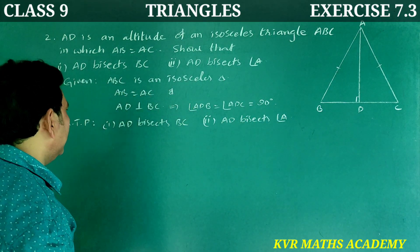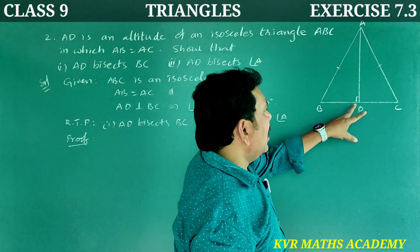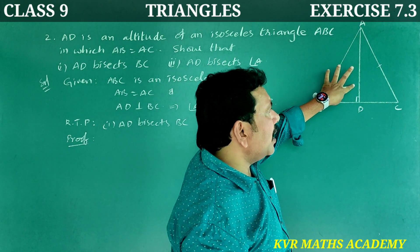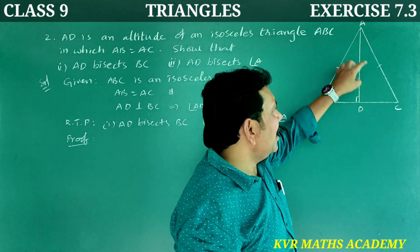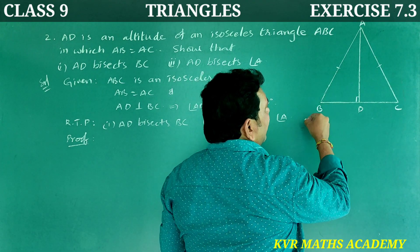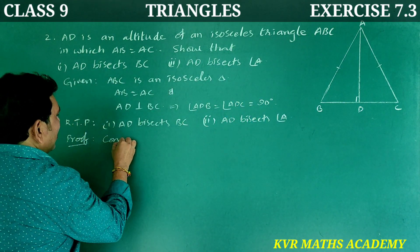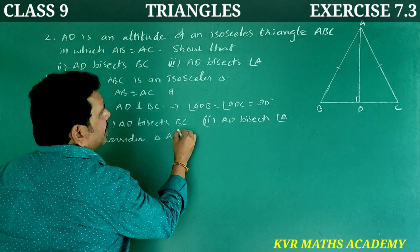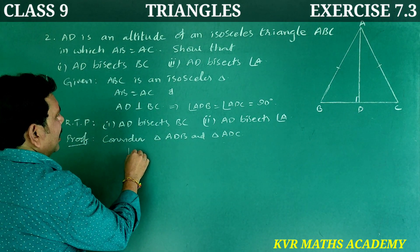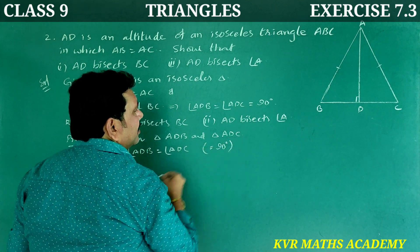To prove: first, AD bisects BC; second, AD bisects angle A. Proof: consider the two triangles — triangle ADB and triangle ADC. In these two triangles, angle ADB is equal to angle ADC, which is equal to 90 degrees — that is a right angle.